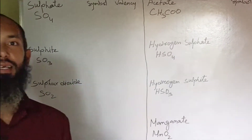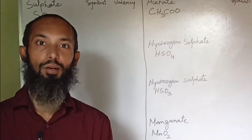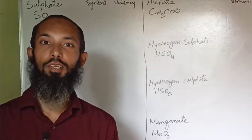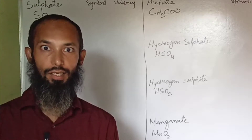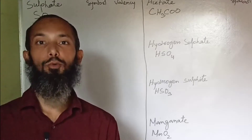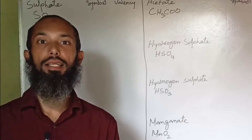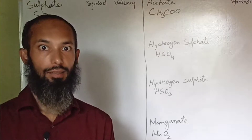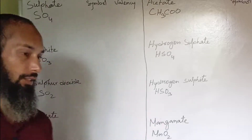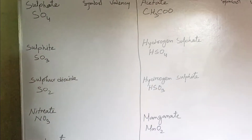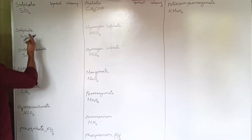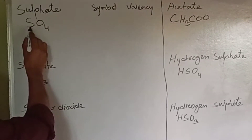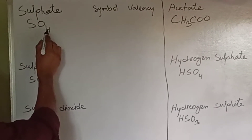Hello there friends, once again welcome back to my channel Scientific Phenomenal Facts. Today I am going to show you how to find out the valency of the radicals. Let's proceed. Here this one is sulfate, its formula is SO4.